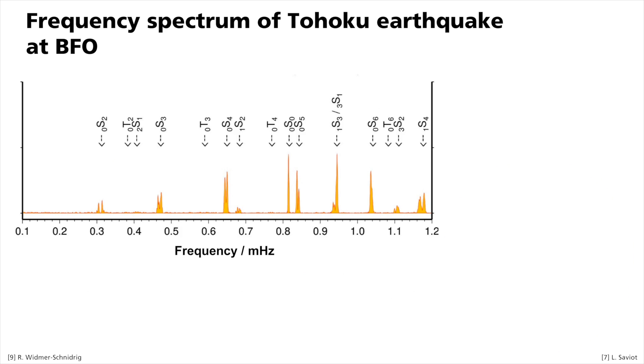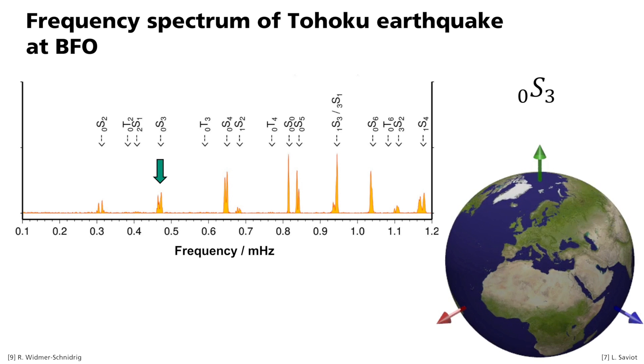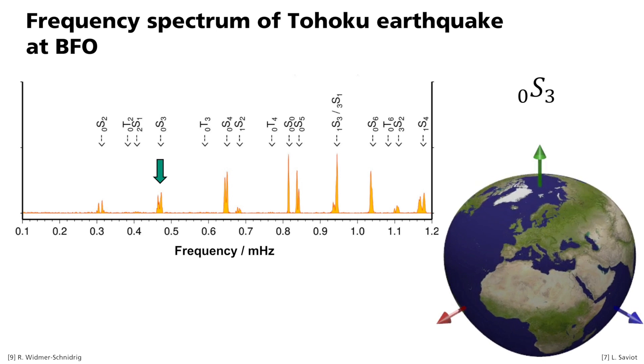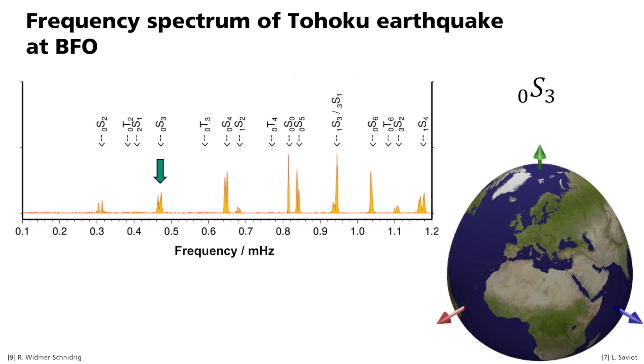An additional example can be seen here in the spectrum: 0S3. It looks like this in the animation. You can see how the number of node planes increases to three.